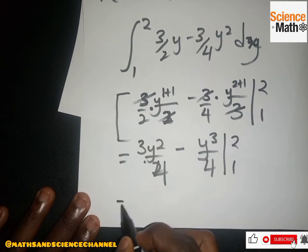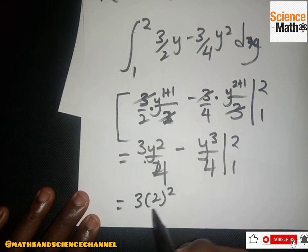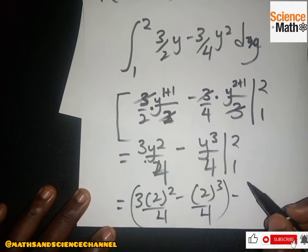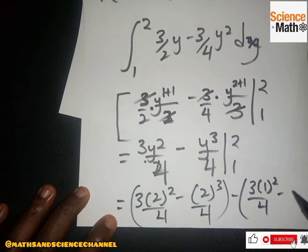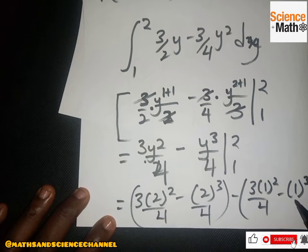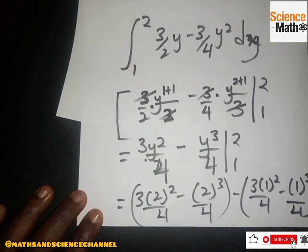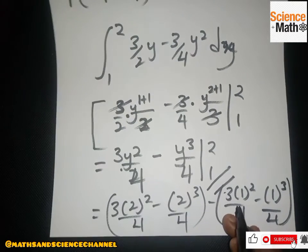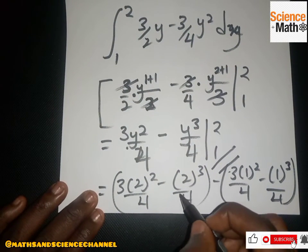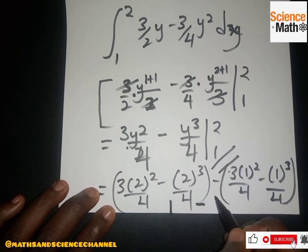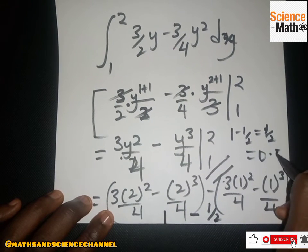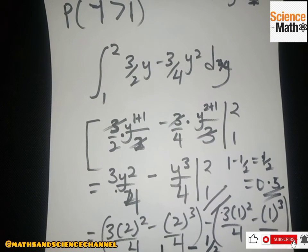Substituting y = 2: 3(4)/4 - 8/4 = 3 - 2 = 1. Substituting y = 1: 3(1)/4 - 1/4 = 2/4 = 1/2. So the result is 1 - 1/2 = 1/2, which equals 0.5. That is the probability that y is greater than one.